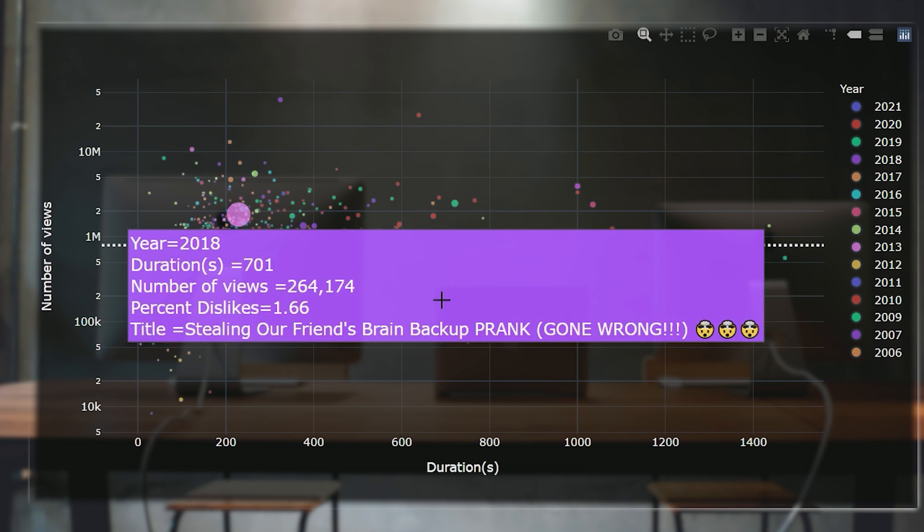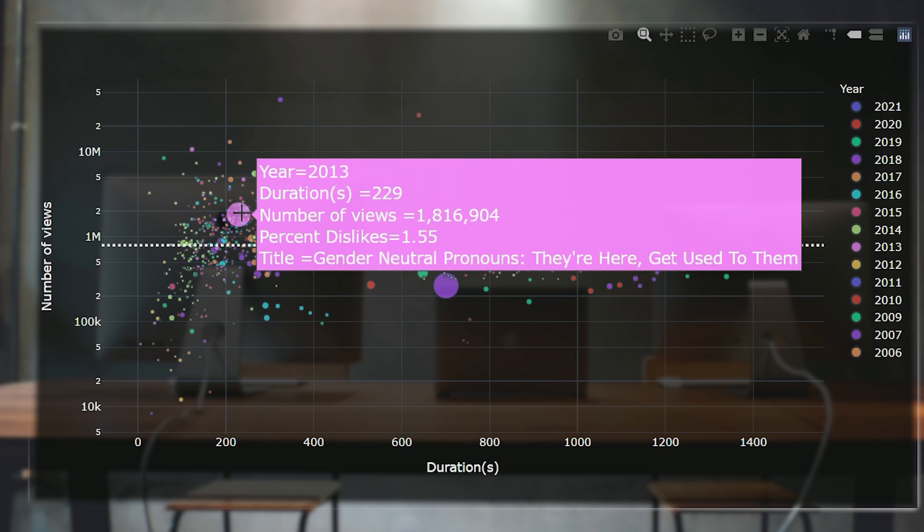But this chart makes obvious which two videos have the highest number of dislikes. They are this video here, stealing our friend's brain backup prank gone wrong, and then this one here, gender neutral pronouns, they're here, get used to them.